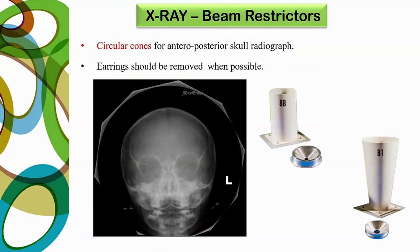A cone is another beam restrictor device. You can use a cone for an anterior-posterior skull radiograph in a baby. Also ensure earrings are removed when taking skull radiography in pediatric patients.